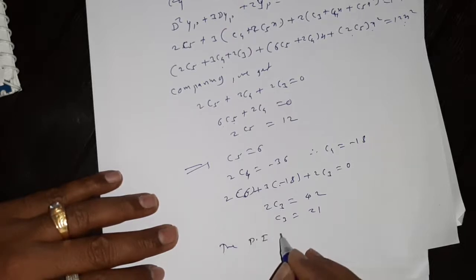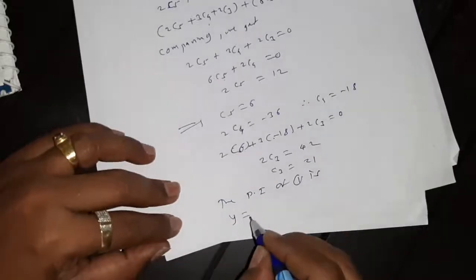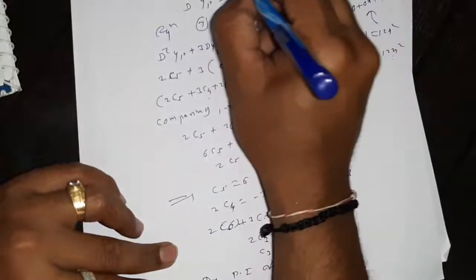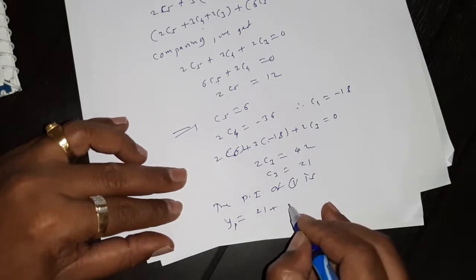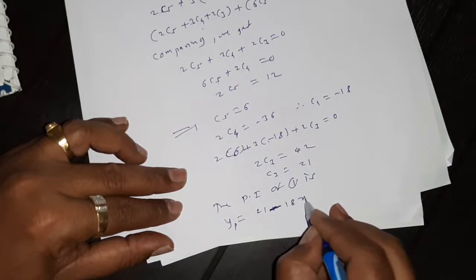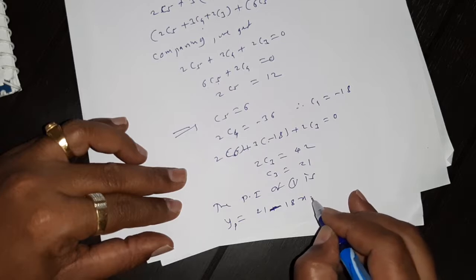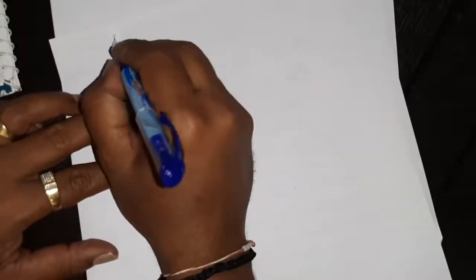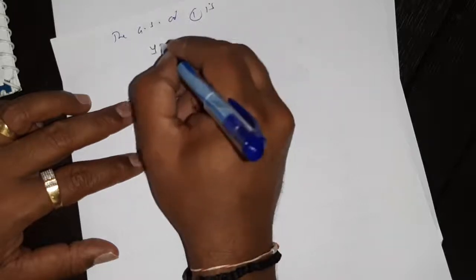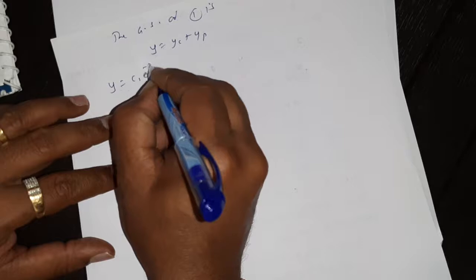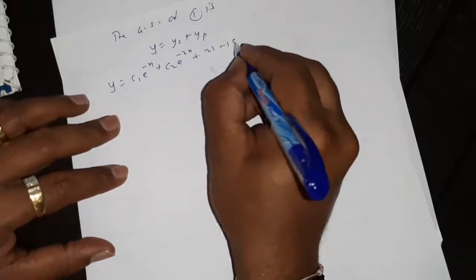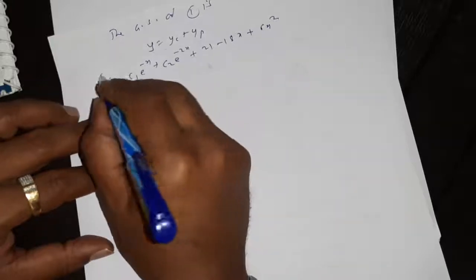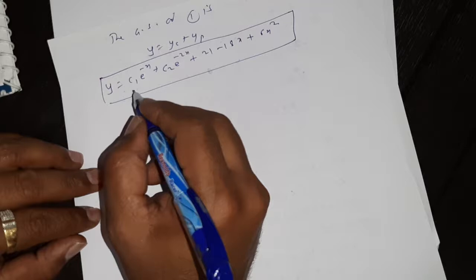Therefore the particular integral of equation 1 is yp equal to c3 + c4·x + c5·x² equal to 21 − 18x + 6x². The general solution of equation 1 is y equal to yc + yp equal to c1·e^(−x) + c2·e^(−2x) + 21 − 18x + 6x². This is the final answer by using the method of undetermined coefficients.